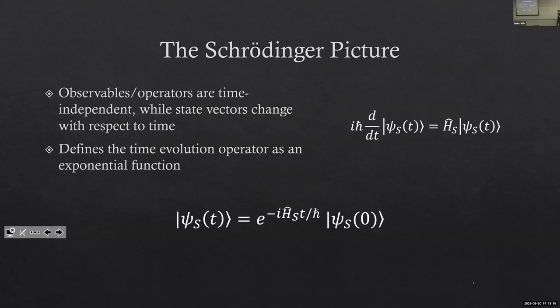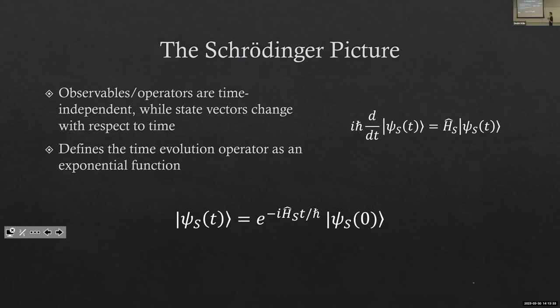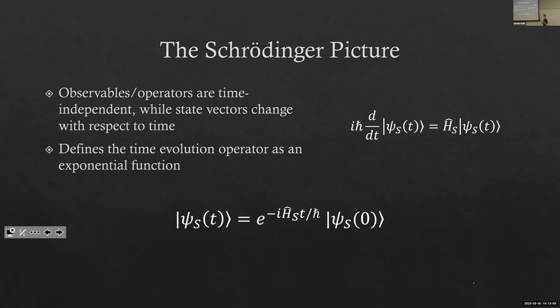The Schrödinger picture — we know this one, from around 1926. What's unique about it in the context of these three pictures is that the state vectors are what get evolved. The operator itself — here I have the time evolution operator, which can be represented by U(t) — acts on the initial state and causes the state function to change. That is our time evolution operator. Thanks, Schrödinger.